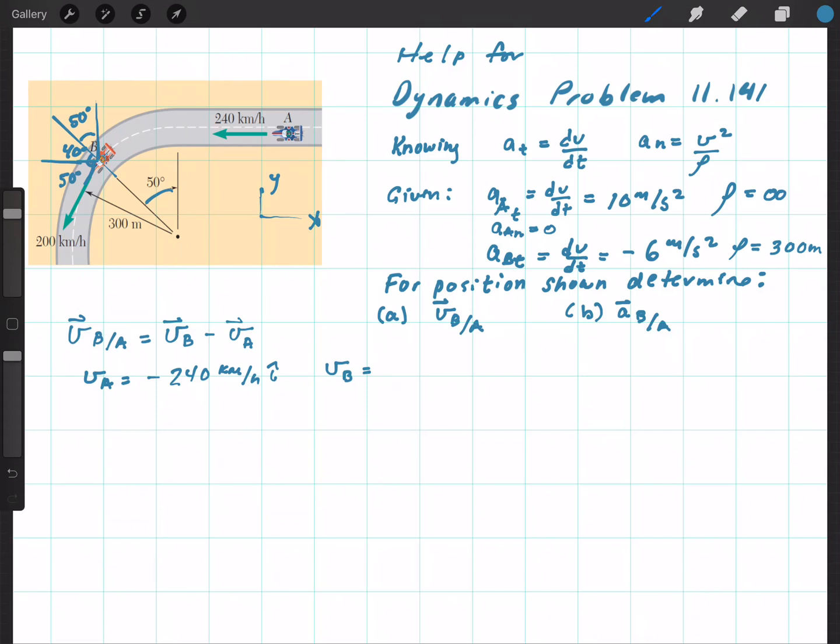So the velocity of B is going to be 200 kilometers per hour at an angle of 50 degrees. And we can write that as a vector, 200 kilometers per hour, multiplied by negative cosine of 50 degrees i minus sine of 50 degrees j. We have our two vectors. All we have to do is subtract them.